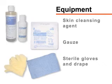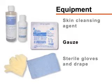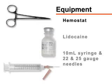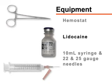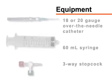For sterile preparation of the site and administration of anesthesia, you will need a skin cleansing agent, sterile gauze, sterile gloves, a sterile drape, a hemostat (which is optional), 1 or 2% lidocaine, and a 10 milliliter syringe with a 22 to 25 gauge needle.